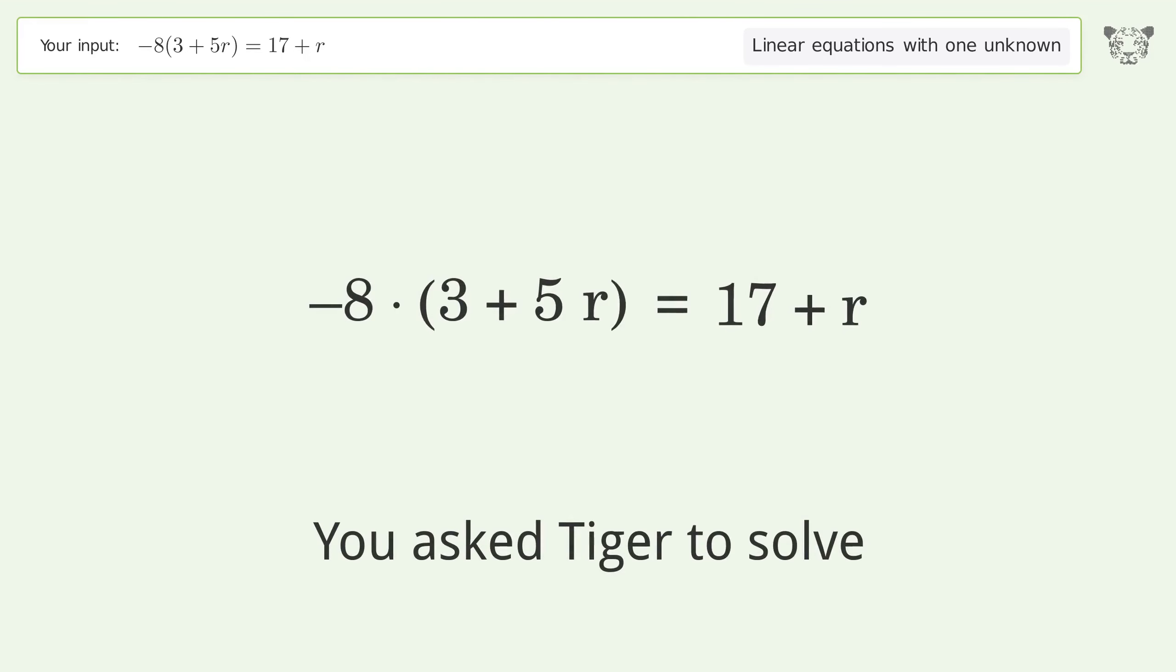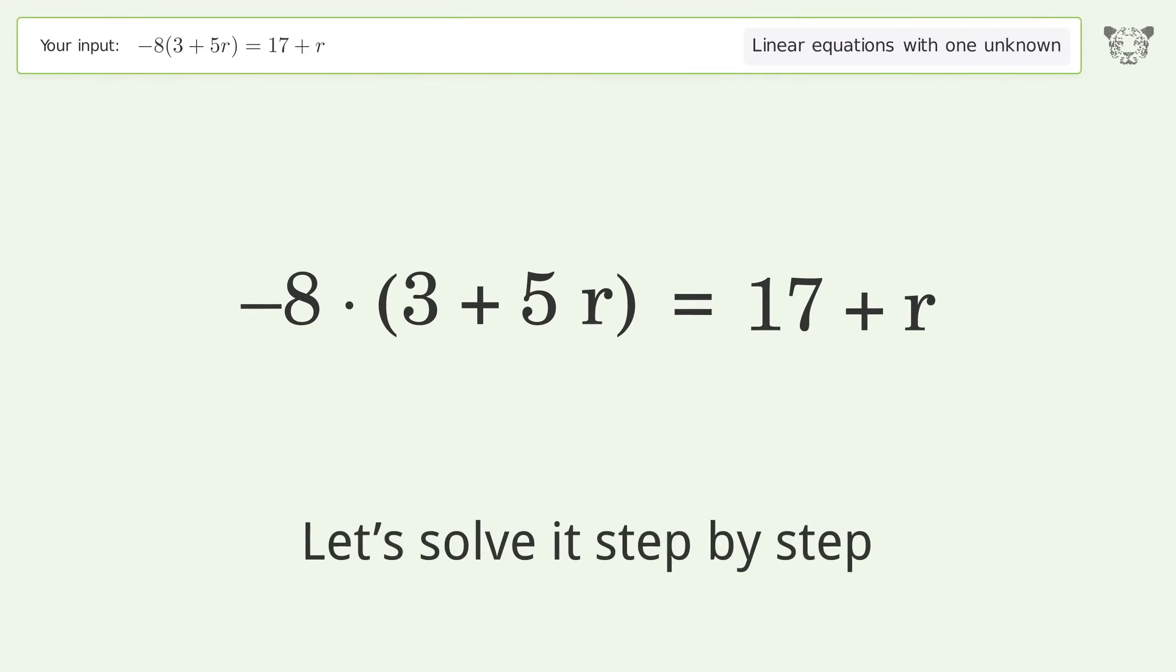You ask Tiger to solve this. It deals with linear equations with one unknown. The final result is r equals negative one. Let's solve it step by step. Simplify the expression. Expand the parentheses.